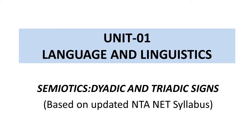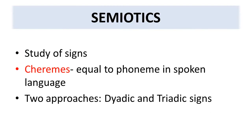Good morning everyone. Today we are going to look at the two models of semiotics. Starting with semiotics, the first question is: what is semiotics? Semiotics is the study of signs, in very simple words. Now we have phonemes in spoken language as the basic unit of sounds, and we have cheremes in sign language — these are also very small units.